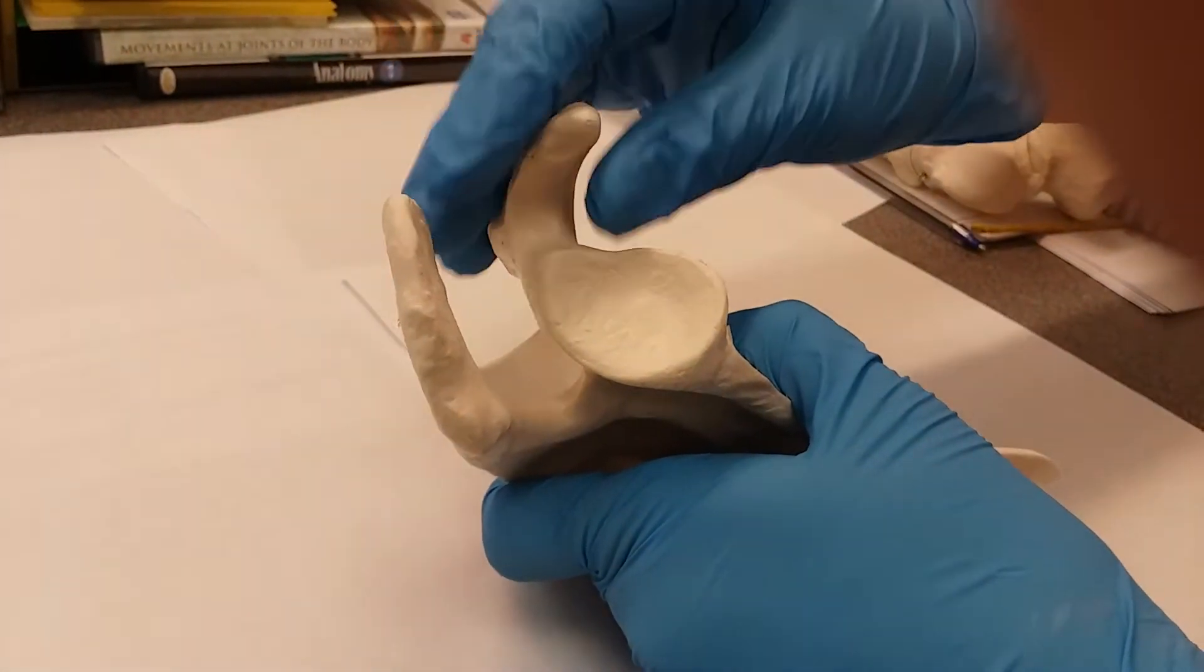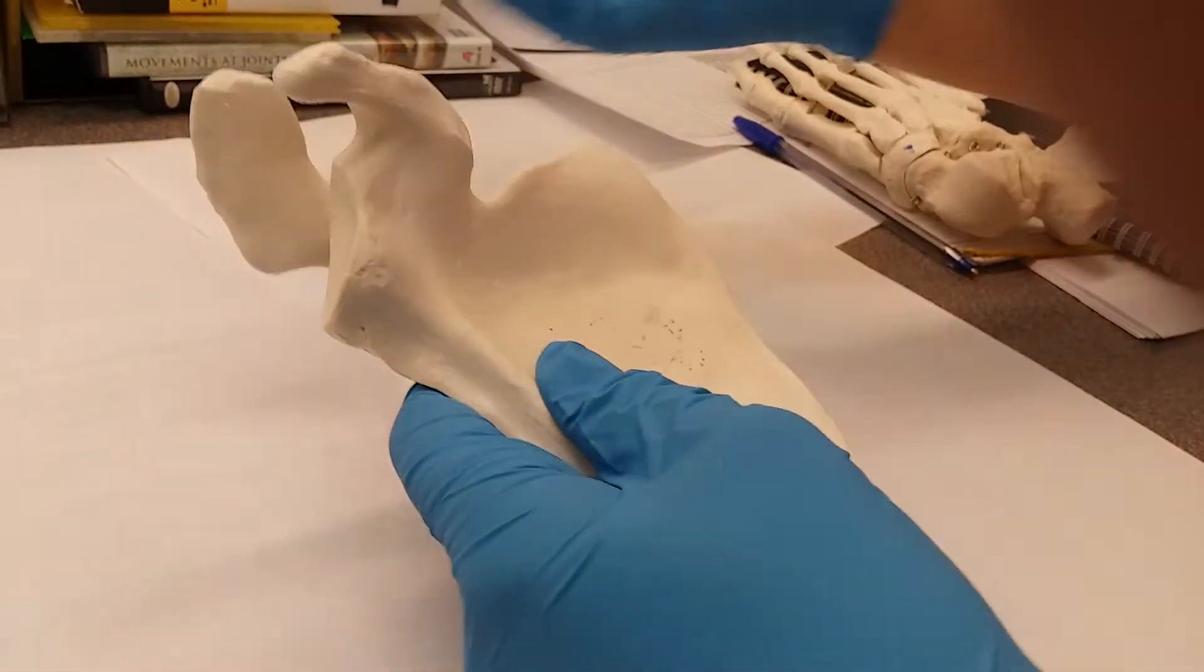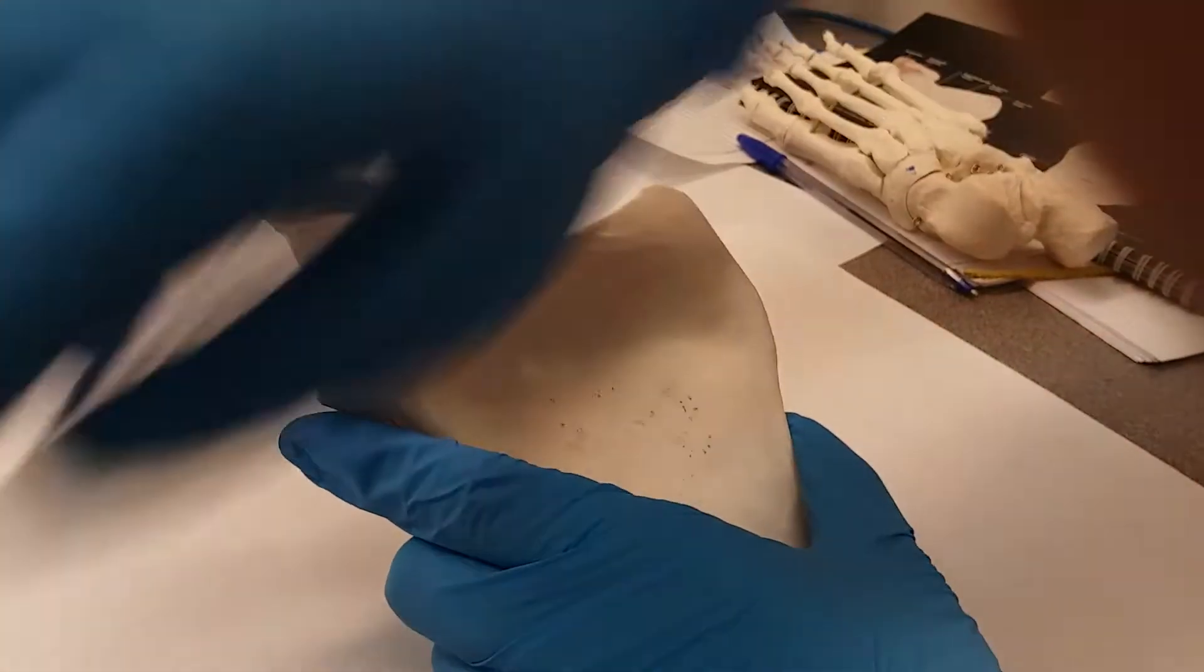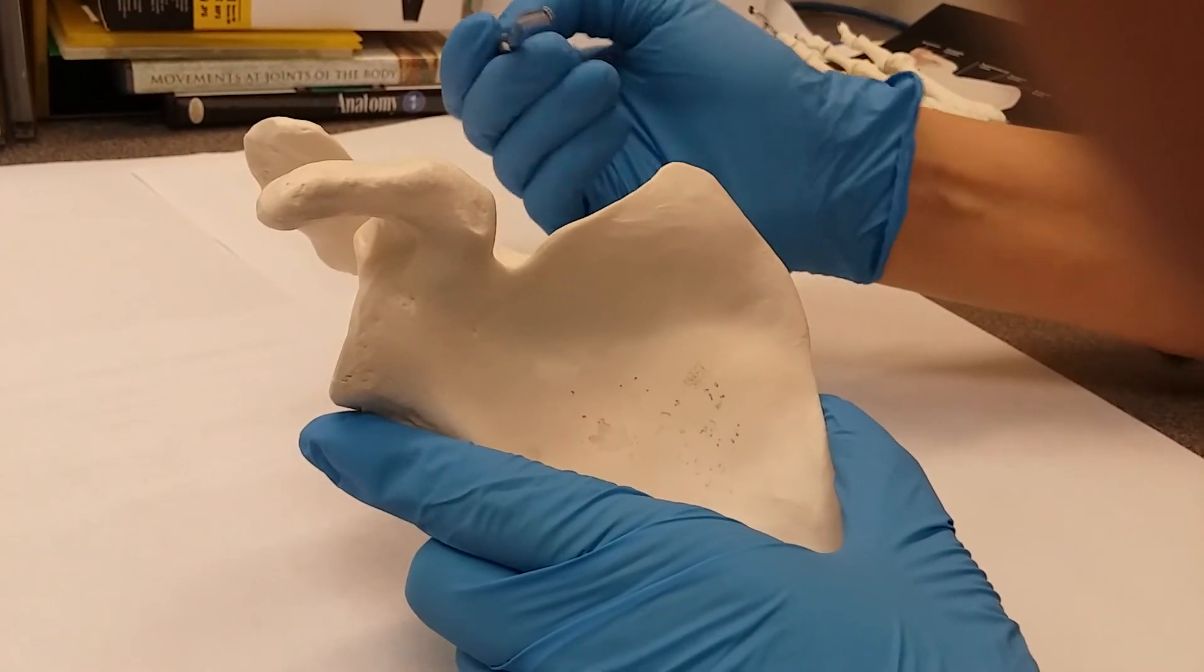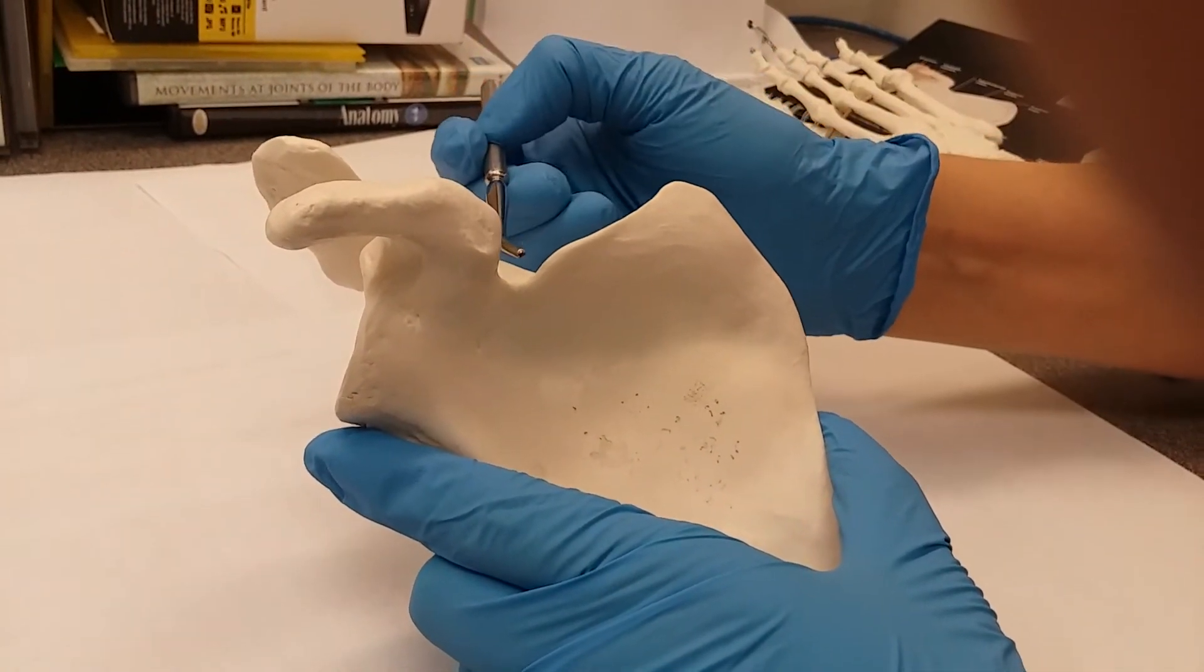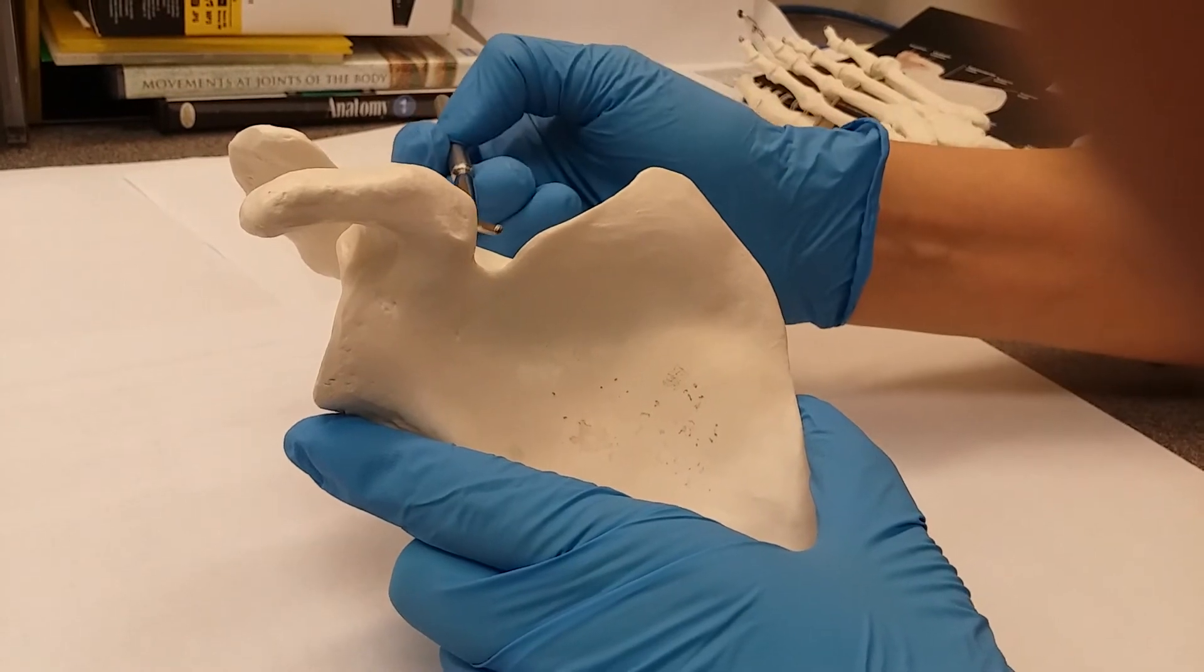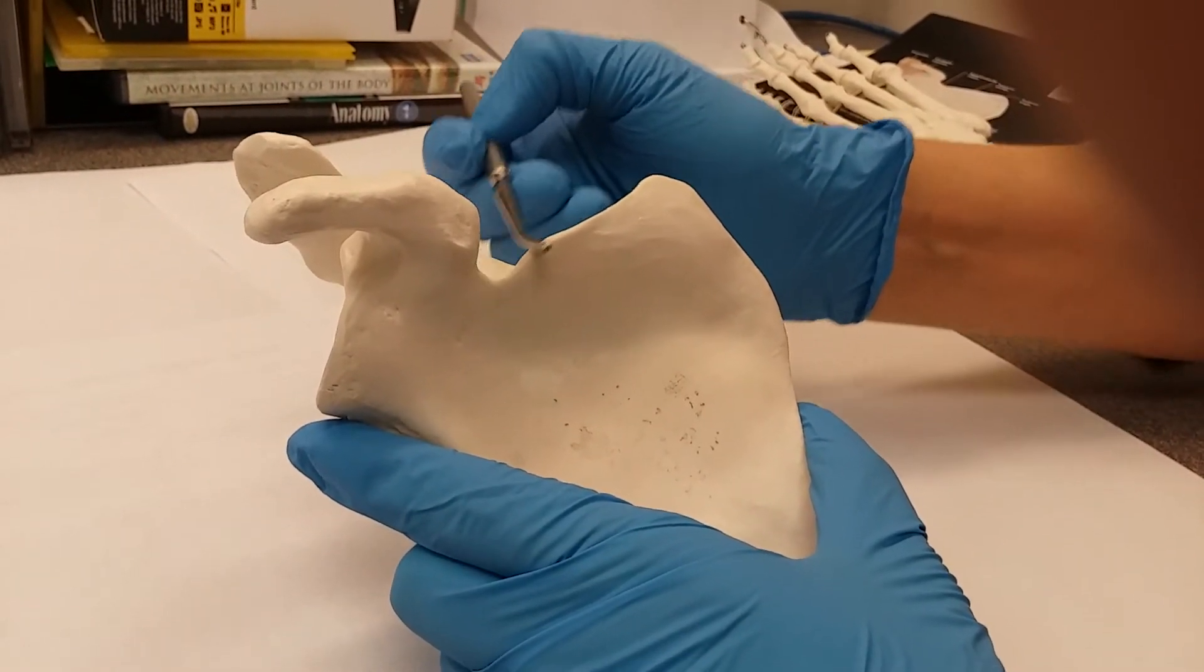We have our subscapular notch. You're going to go back to the anterior view to see that. Your scapular notch. On less budget-friendly models, there's an actual larger, deeper depression. But in ours, it looks a little bit like a groove.